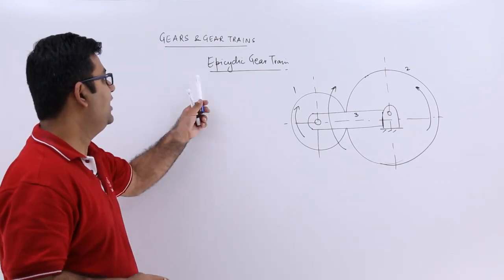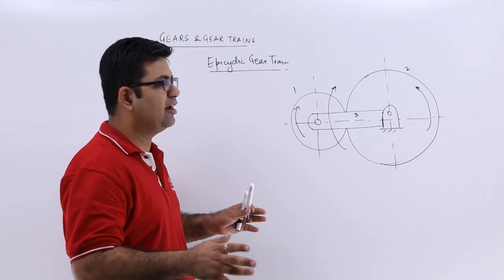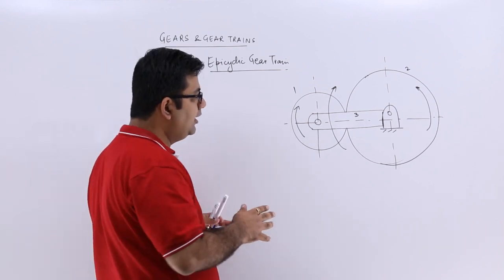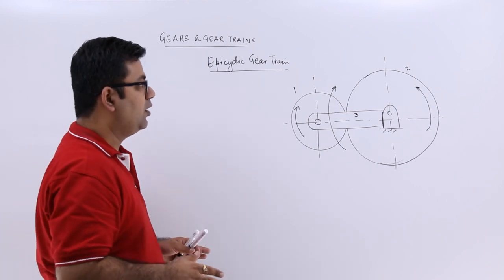Now let's talk about the epicyclic gear train. So this is how an epicyclic gear train looks like. It is not necessarily in the same configuration, but this is how it looks like.